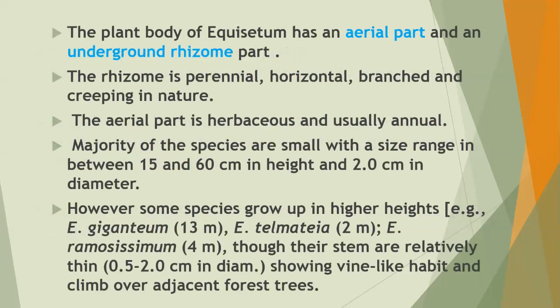The plant body of Equisetum has an aerial part and an underground rhizome part. The rhizome is perennial, horizontal, branched, and mainly creeping in nature. The aerial part is herbaceous and usually annual. The majority of the species are small, with size ranging between 15 and 60 cm in height and 2 cm in diameter. However, there are some variations.